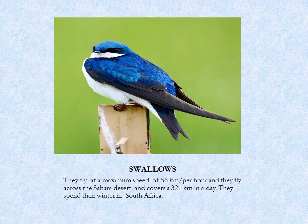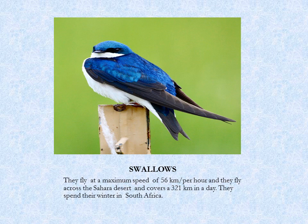The next bird is the swallow bird. This bird is also a migratory bird. You can see the color of the bird is blue. It stays in a place where it is too cold and they are not able to survive, so they migrate and leave that place to another place where there is less cold or no cold at all.